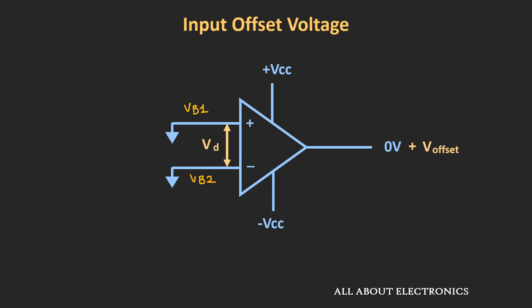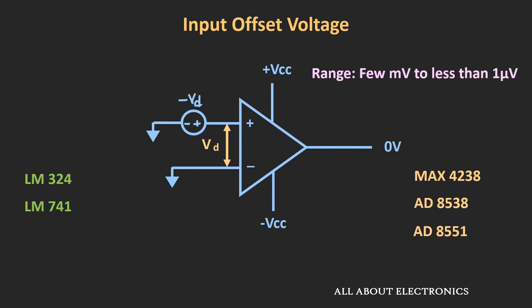This potential difference gets amplified at the later stages, and because of that, we get some offset voltage at the output terminal. Now, if we apply a differential voltage of opposite polarity at one of the op-amp terminals, we can ensure that the output is 0V. So the definition of input offset voltage is: the amount of differential input voltage required to be applied between the two terminals such that the output of the op-amp becomes 0V. This can be a few mV for general-purpose op-amps and as low as 1 µV for very high-precision op-amps.